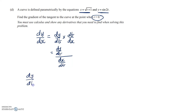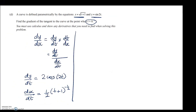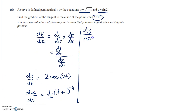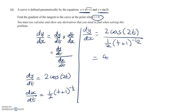So dy by dt is the first one we'll do, and we get 2 cosine of 2t. And dx by dt is equal to one half times (t plus 1) to the negative one half. Now putting those together, dy by dx is equal to 2 cosine of 2t divided by that. Cleaning that up gives 4 cos 2t times the square root of (t plus 1).